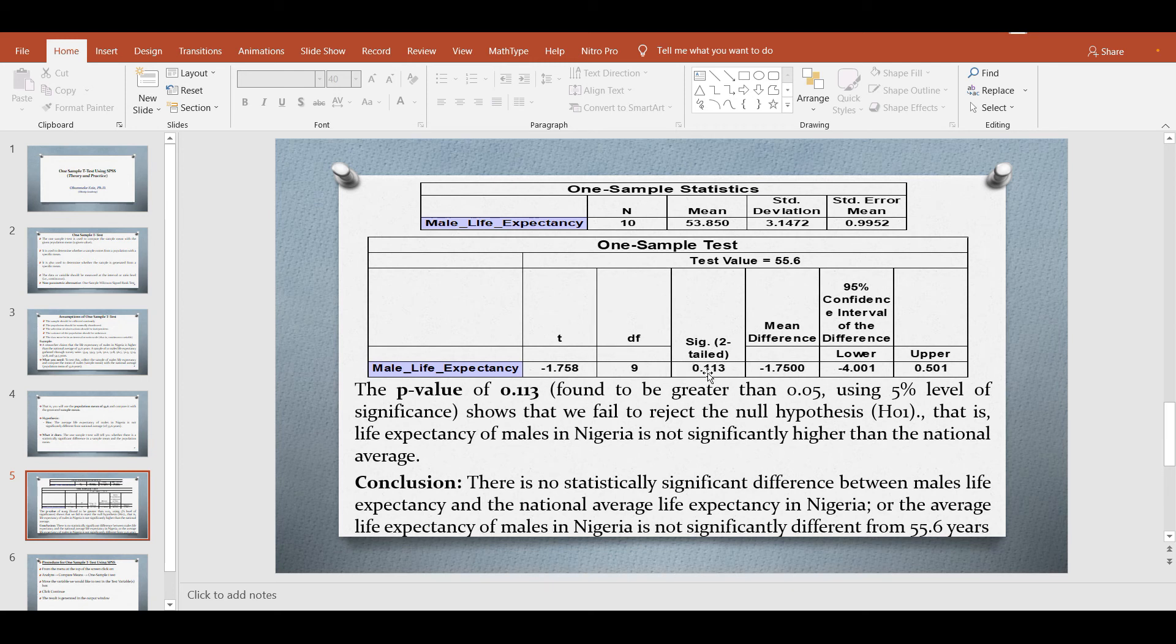This p-value of 0.113 using 5% level of significance shows that we fail to reject the null hypothesis. That is, the life expectancy of males in Nigeria is not significantly higher than the national average. In conclusion, there is no statistically significant difference between males life expectancy and the national average life expectancy in Nigeria, or the average life expectancy of males in Nigeria is not significantly different from 55.6 years.